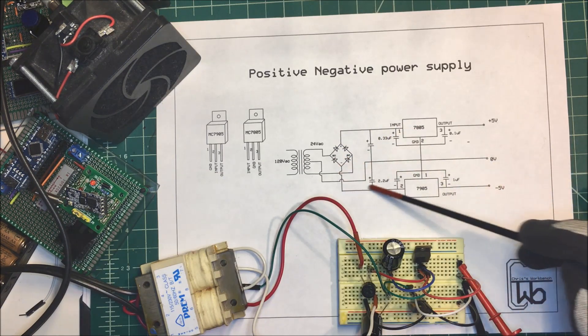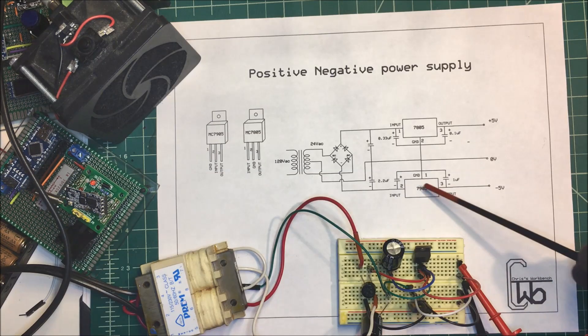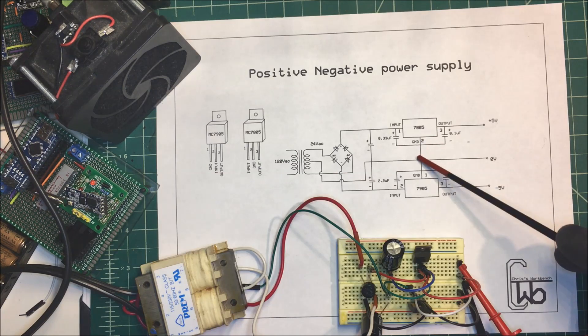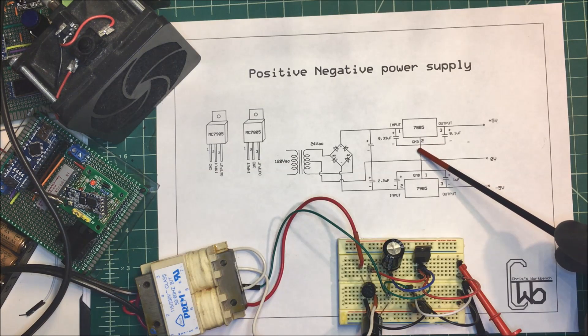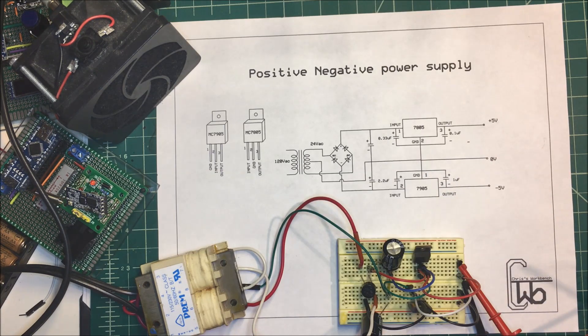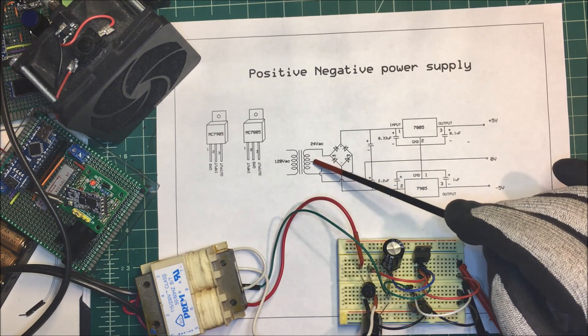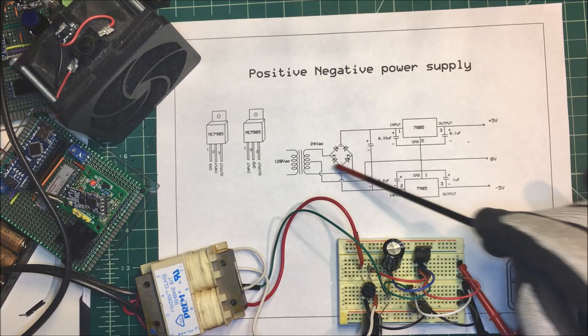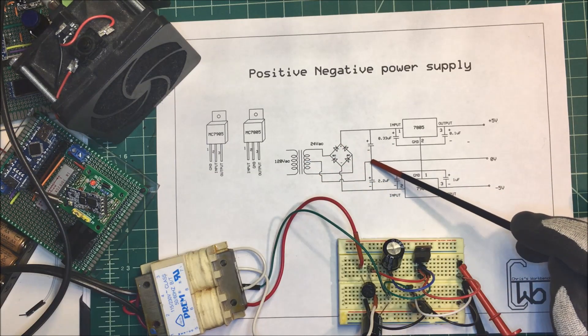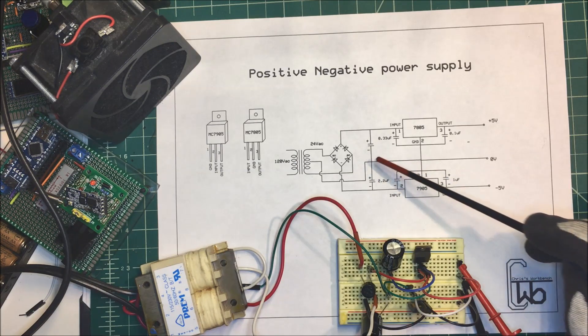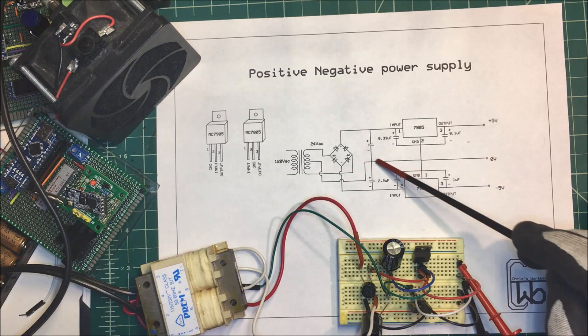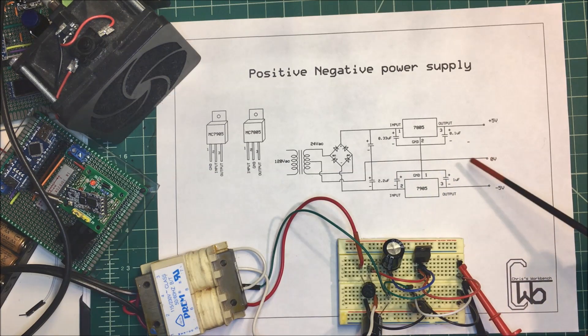Now this ground has to go negative in order for it to work, and this ground has to go positive in order for it to work. So what we're doing is we're taking the negative and positive here and we're center tapping the transformer here, and it comes over to this point here. And that's going to be our common or our ground point there, zero reference.